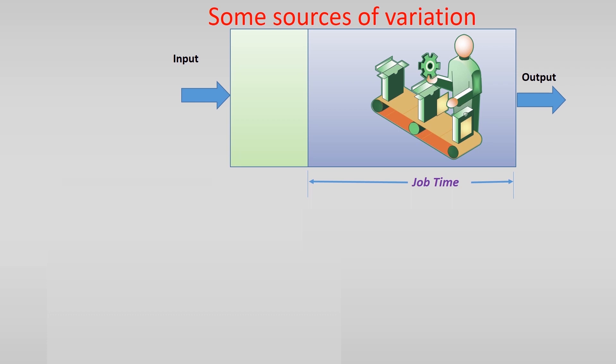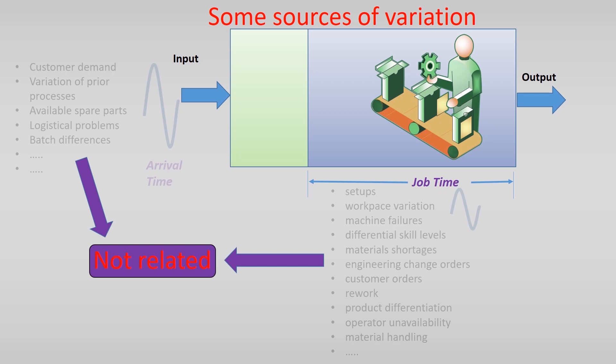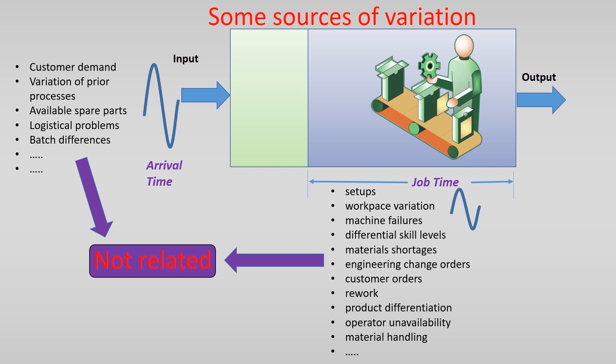This variation in the arrivals can be caused by a lot of reasons. Some are stated here. And of course the variation in job time can be caused by a lot of different situations too. What you can see is the variation of these two are not related. There is usually not one common cause.